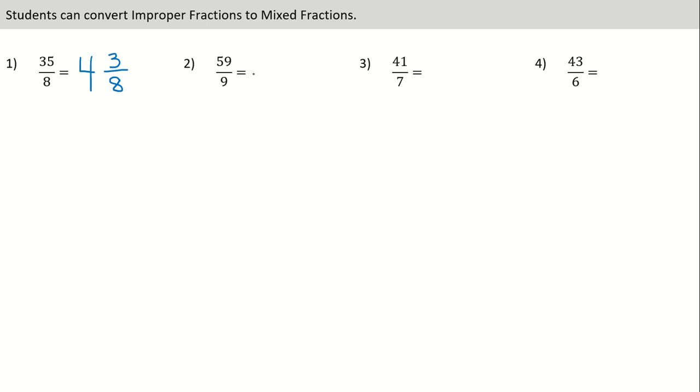Example number two. Let's leave a space for the whole number. Put in our fraction bar. Denominator stays the same. Now let's do some division. How many times can nine go into 59? That would be six. So six is our whole number. To figure out the numerator, we're going to multiply these two values and see what we get. Nine times six is 54. But we need 59, so we need five more.